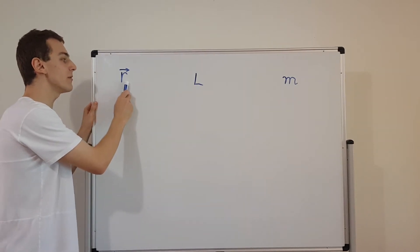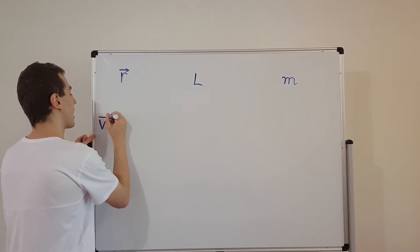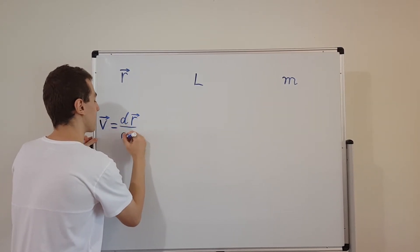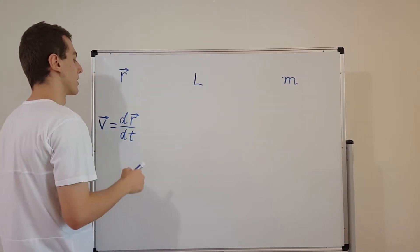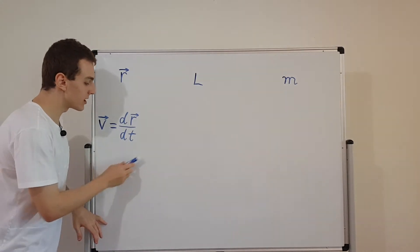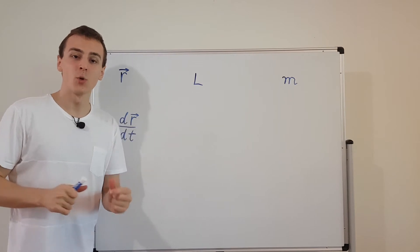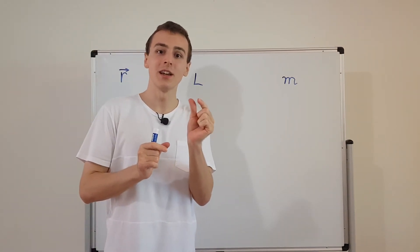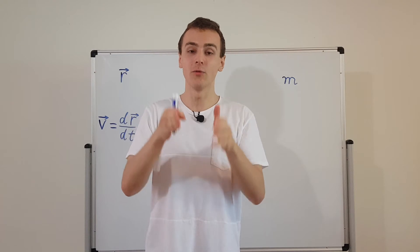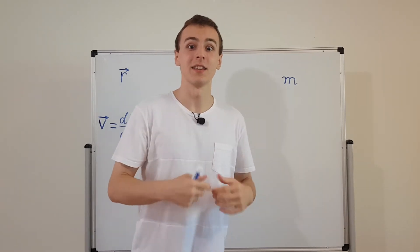Now let's take the time derivative of this position vector to get velocity. Velocity, which I'll represent by v with a little arrow on top, is equal to the time derivative of the position vector. So what is that going to do to the units? Well, what we're doing when we're taking the derivative is we're actually dividing by a very, very tiny increment in time. We're taking the limit as a little change in position is divided by a little change in time — that ratio is what differentiation is. You're taking the ratio of two quantities and taking the limit as those quantities get very, very small.